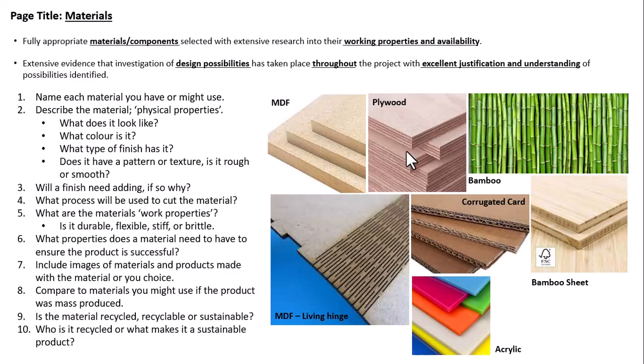There's a checklist at the bottom. The first bit, which everyone will have to do, is look at materials. Examples of materials available in the workshop at school include MDF, plywood, corrugated card, acrylic, bamboo sheet, and pine. For each material, name it and discuss its physical properties — what does it look like, what colour is it, what finish does it have, is it smooth or glossy or matte? MDF might need finishing, so you might put a veneer on it or laminate a piece of paper with a design to add a graphics element.